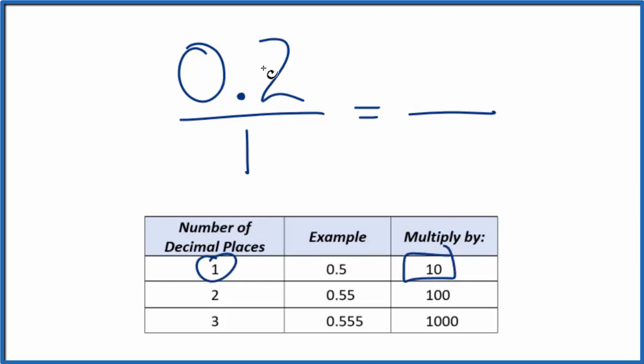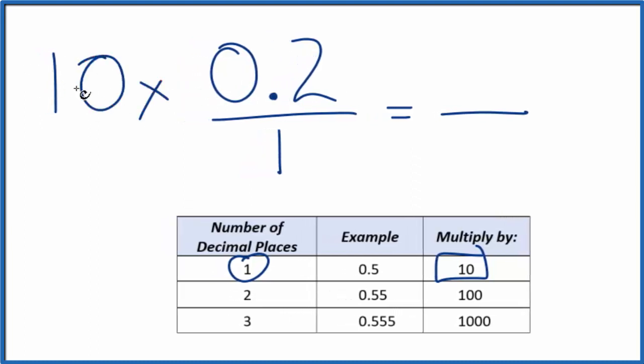So let's multiply 0.2 times 10, and now 10 times 0.2, that's just 2, so we have a whole number.